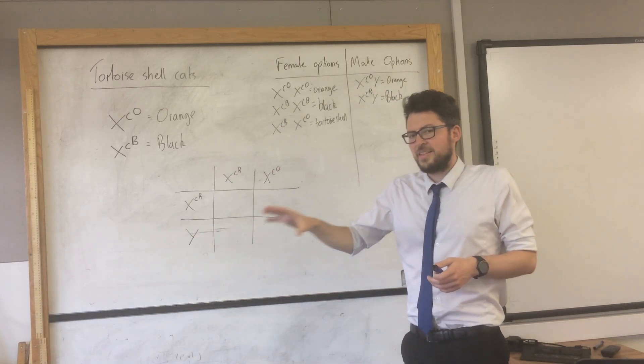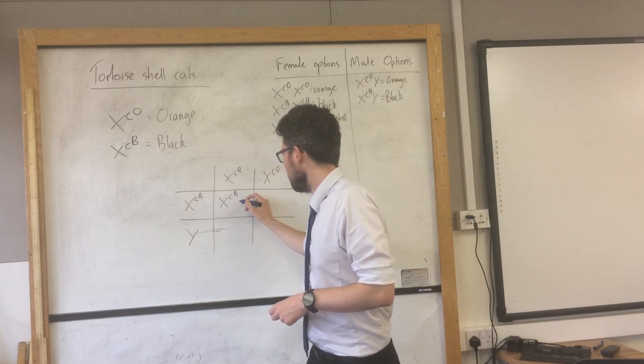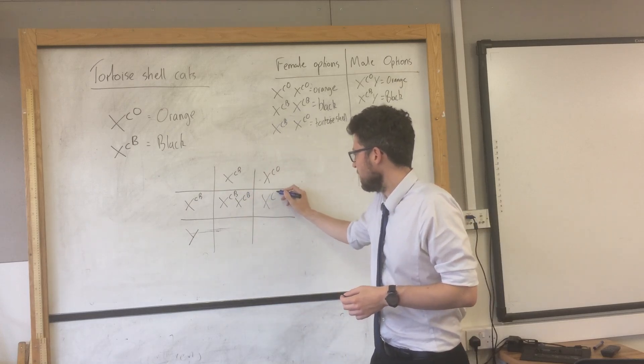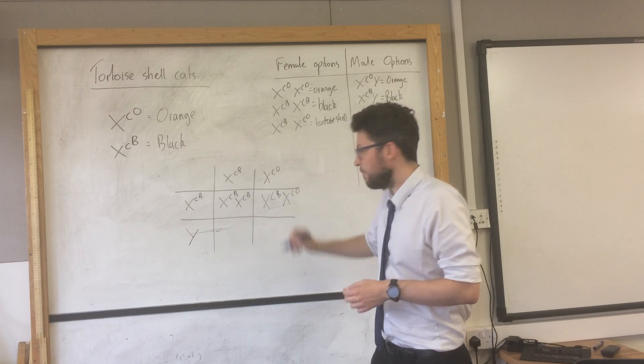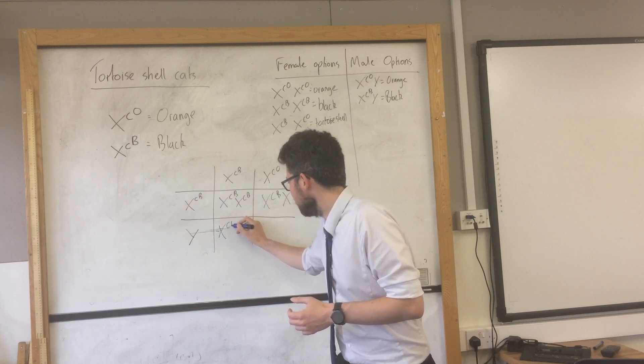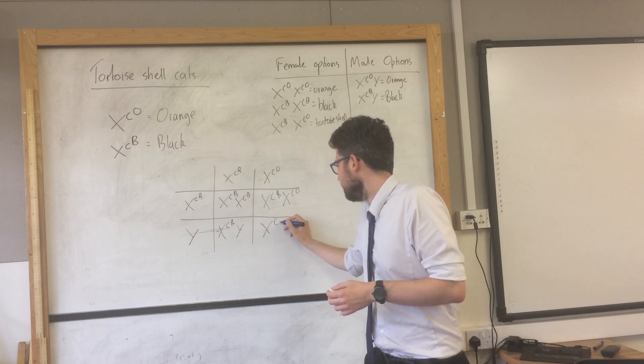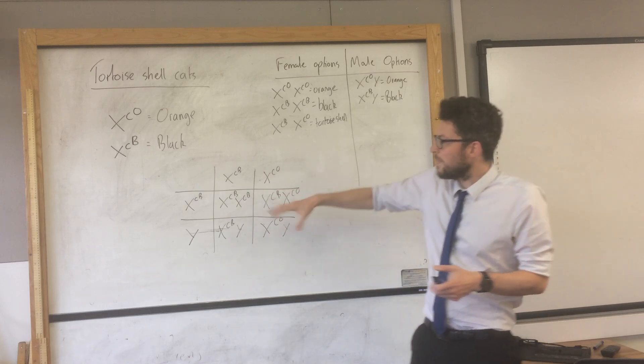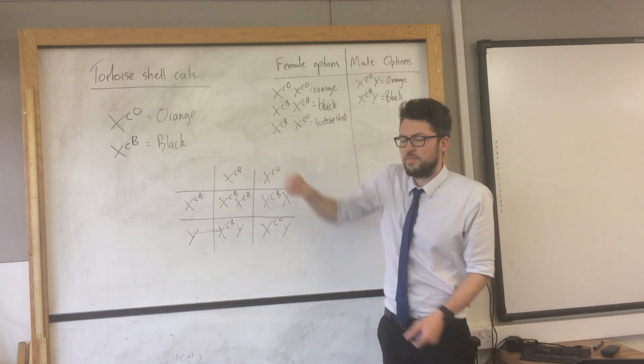So then all we have to do is complete this genetic cross diagram, which I'm sure you've done things like this many times before. So we get XC-B, XC-B; XC-B, XC-O; XC-B, Y; and XC-O, Y.